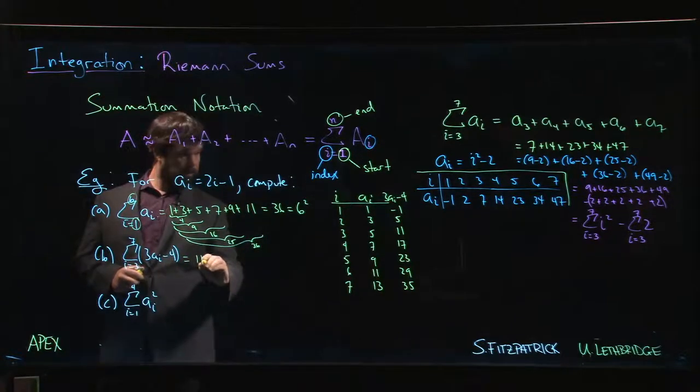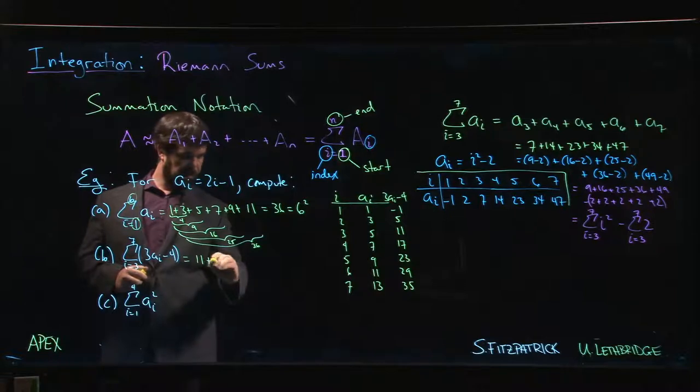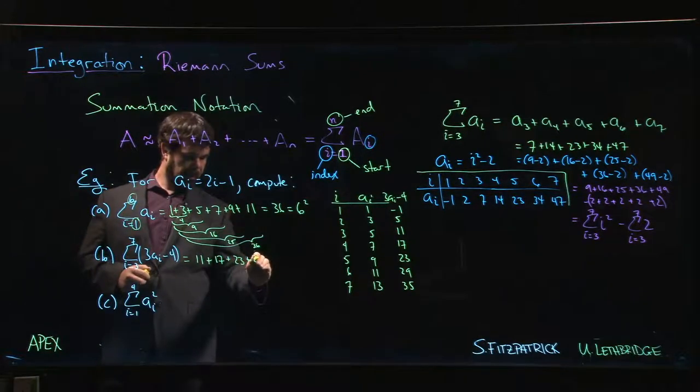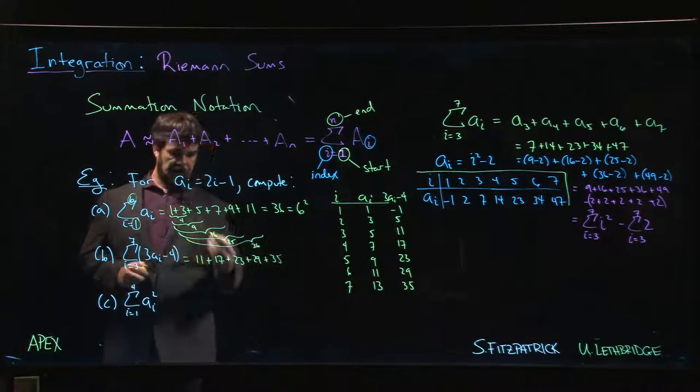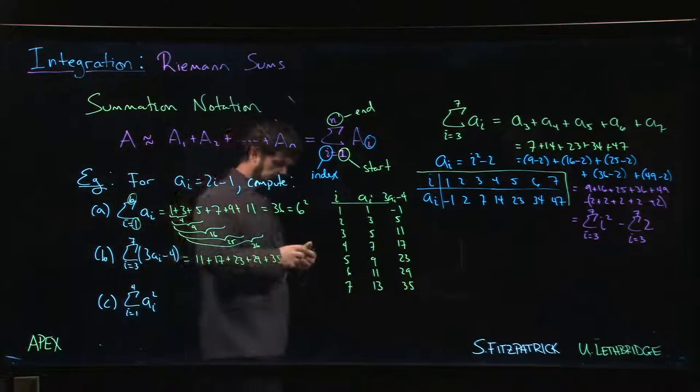So we go to three, we have eleven plus seventeen plus twenty-three plus twenty-nine plus thirty-five, and then we add those up. Okay, leave it at that.